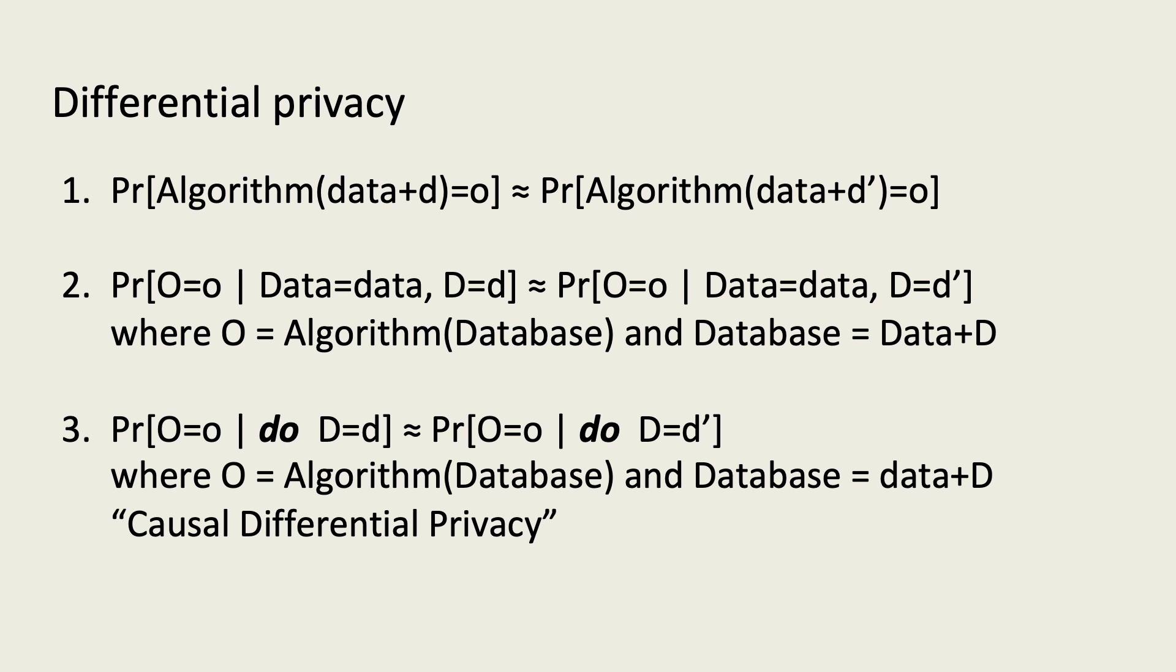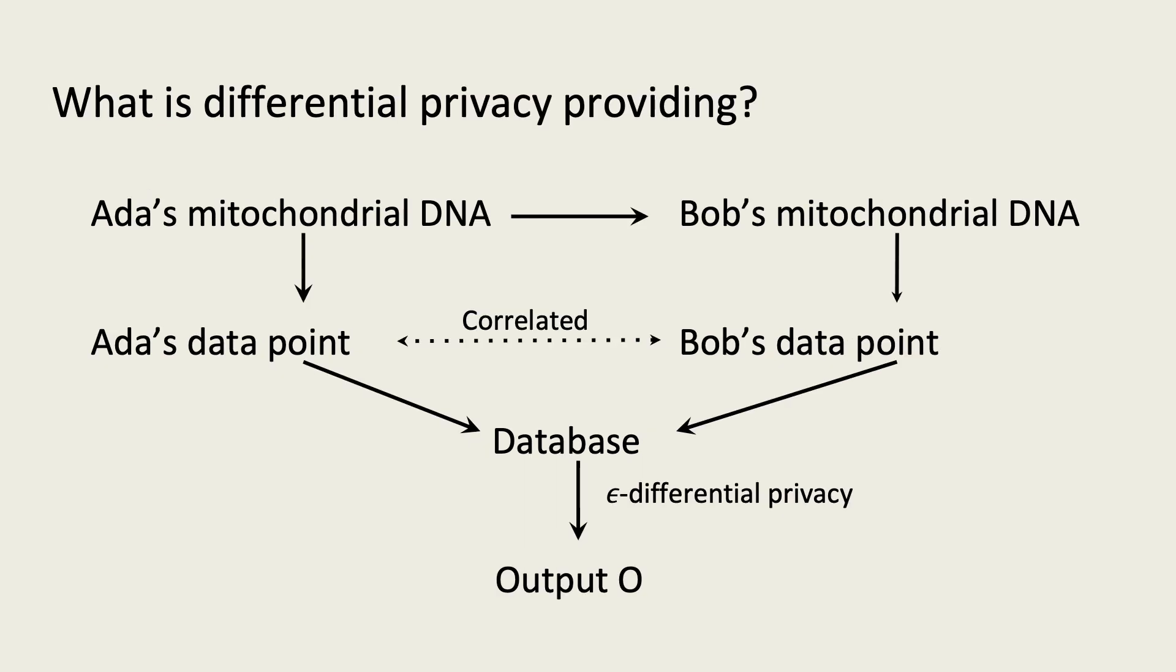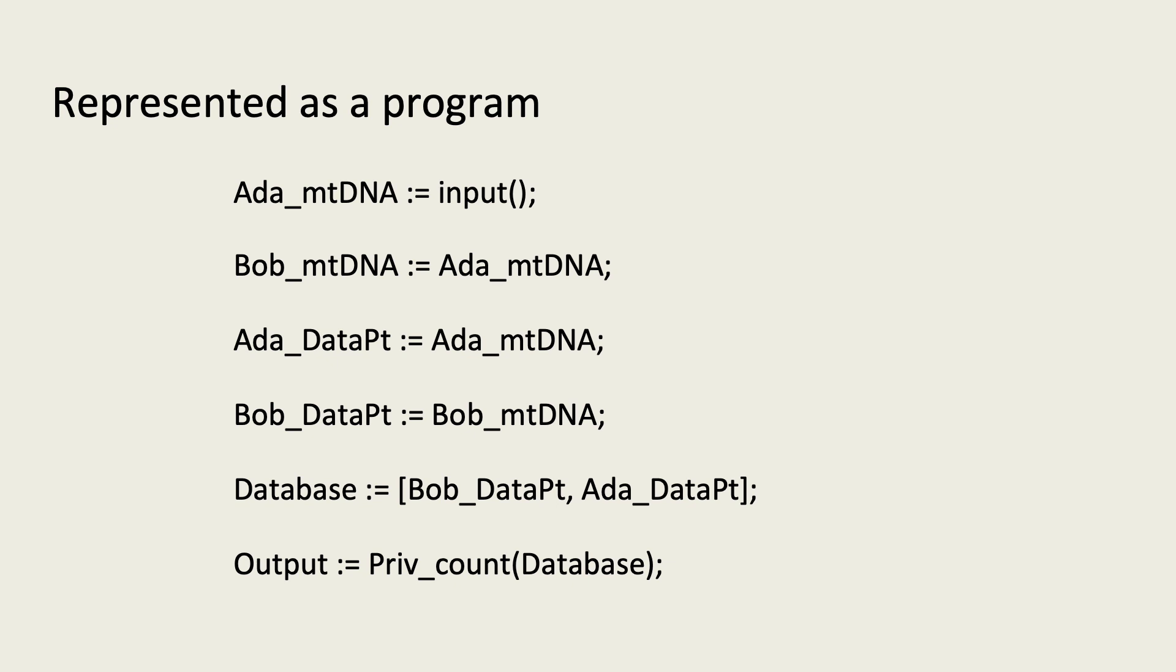To make this precise, let's return to our example, represented as a program. We use assignments to represent causal links. Like assignments in a programming language, these links are directional, flowing from the right-hand side to the left-hand side.